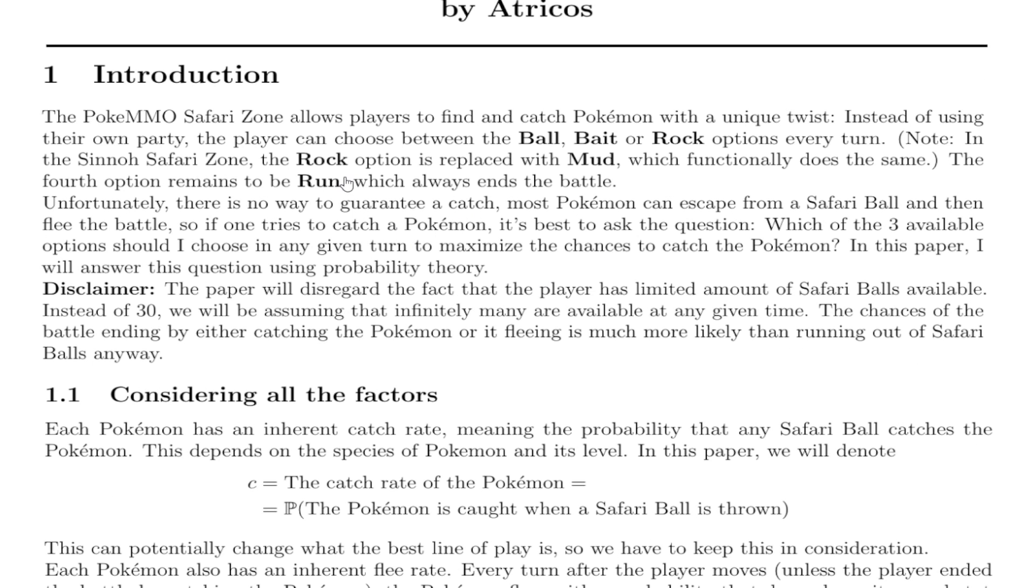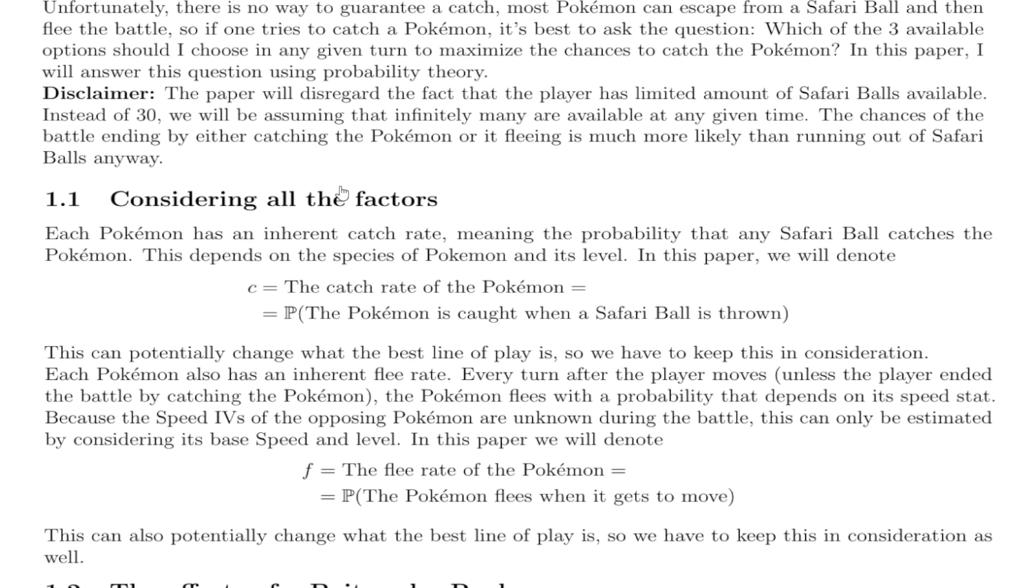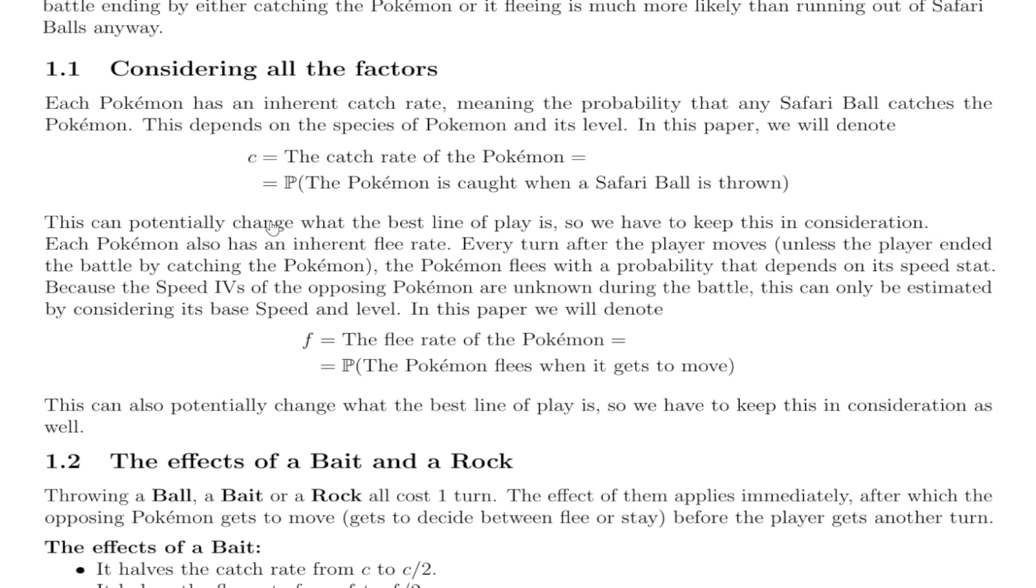There's only a couple options. You can either ball, bait, or rock. Mud is the same thing as rock in the Safari Zone. And you have to understand which is the best to do each turn. Considering all the factors, each Pokemon has an inherent catch rate, meaning the probability that any Safari ball catches the Pokemon. This depends on the species of the Pokemon and its level and its speed stat. Yes, it's speed.